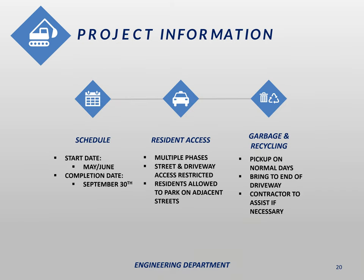The anticipated start date for this project would be sometime in May or June. We will likely hold a pre-construction conference in April, at which we'll get a schedule from the contractor and know approximately when they want to start. At that time, the City will send out notifications to all property owners along the project area. The final completion date is September 30th. That doesn't mean the entire project area will be under construction from May to the end of September — the contractor simply has that window of time to complete the project, which may be completed in phases, each with a specific amount of time allotted.